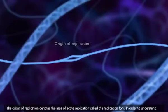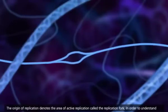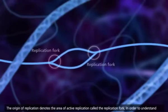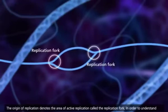The origin of replication denotes the area of active replication called the replication fork.